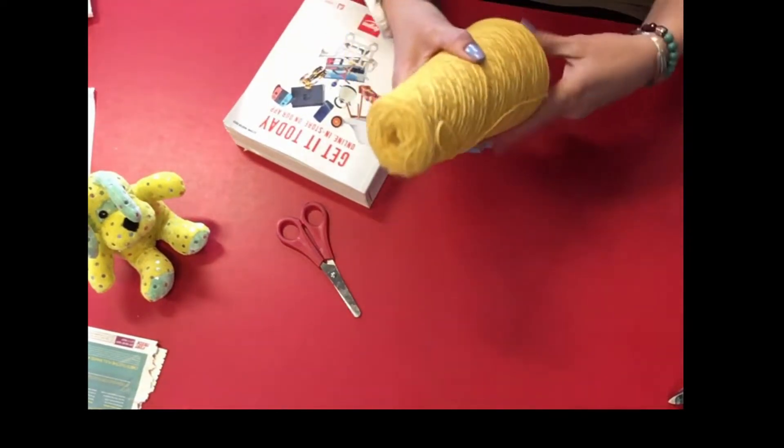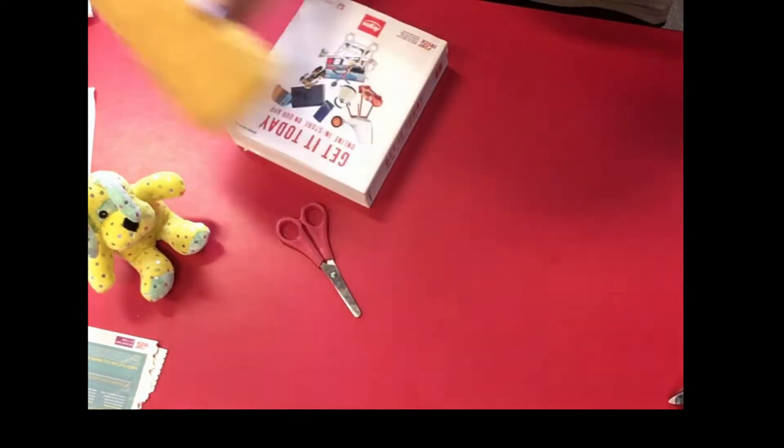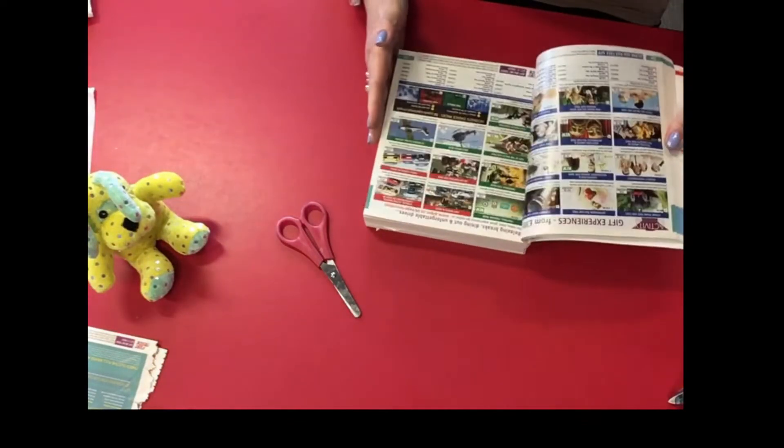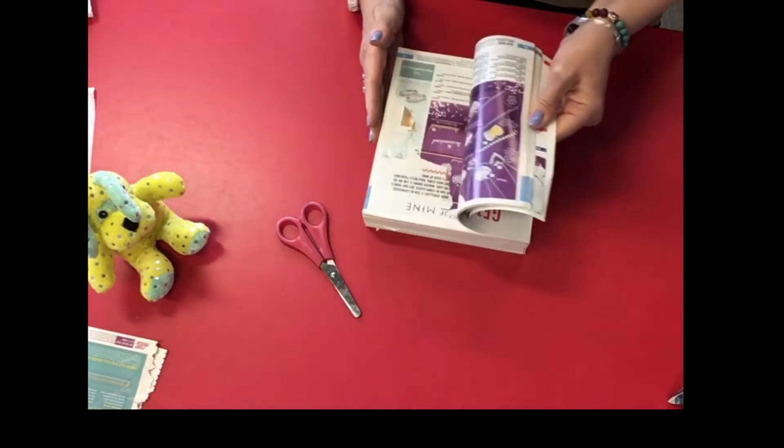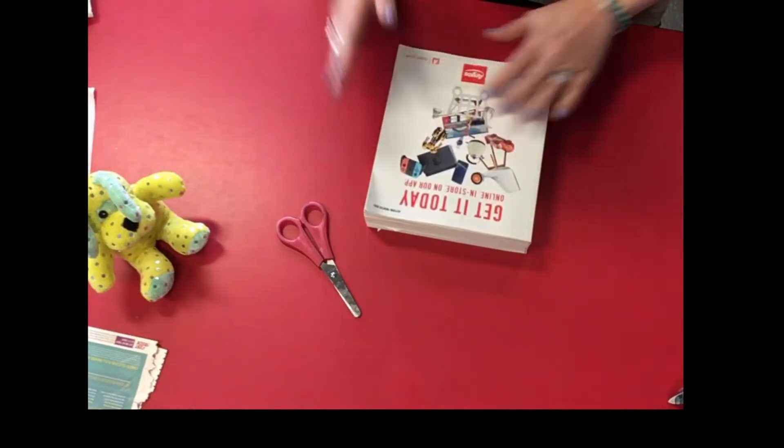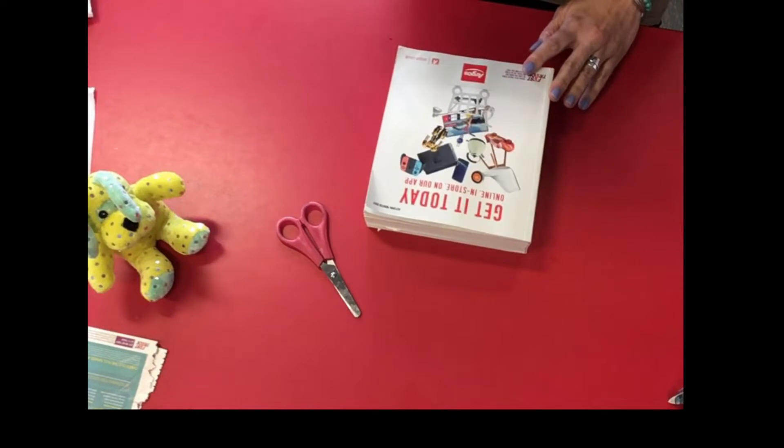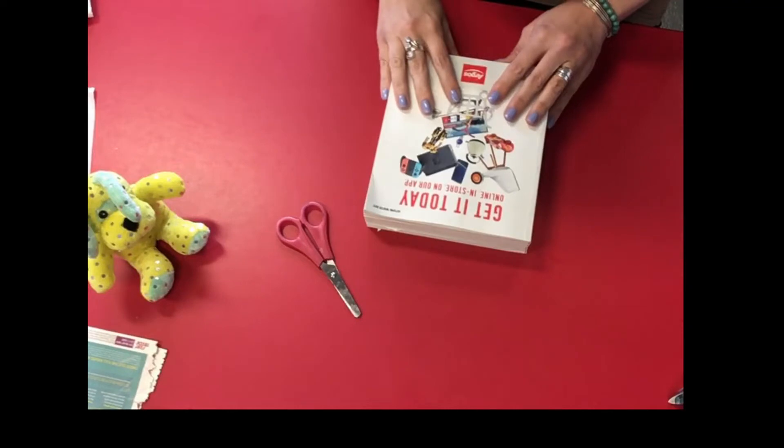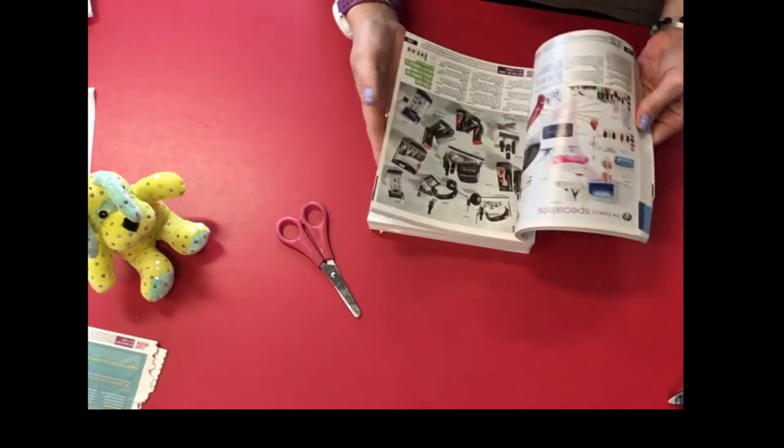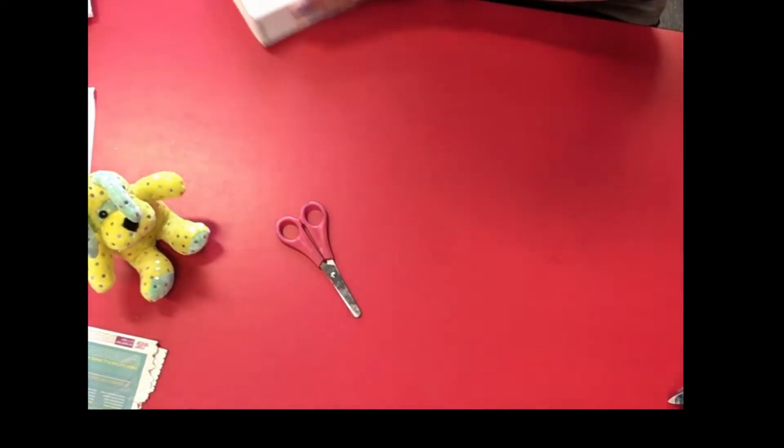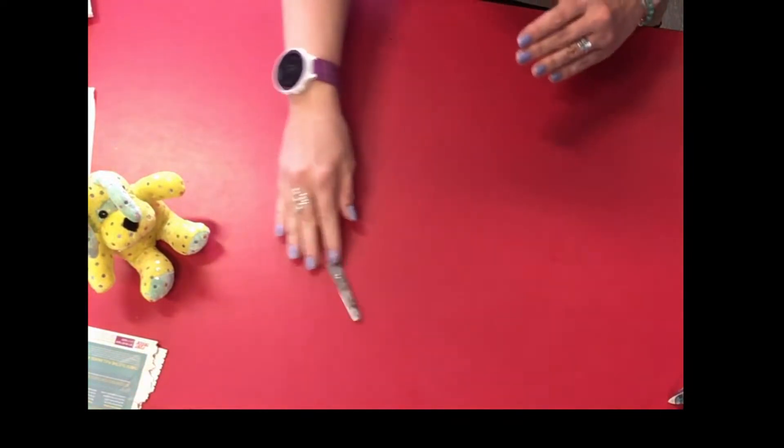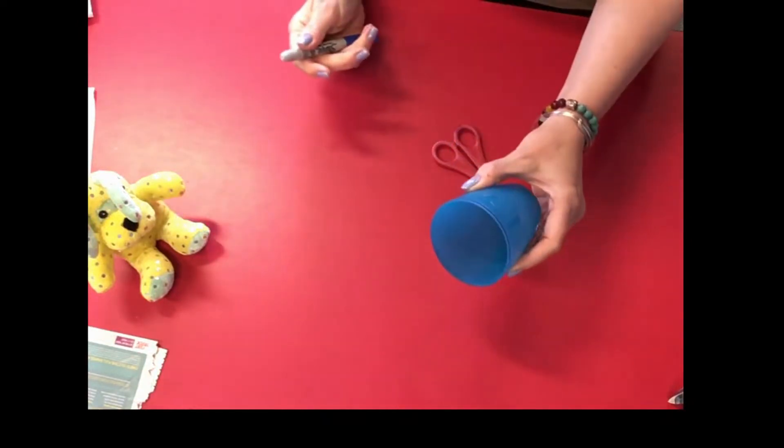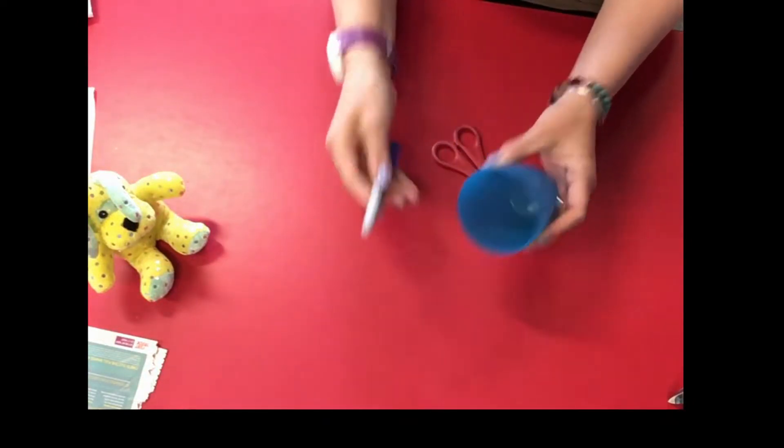So some of the things we're going to need are some wool or some string. We're going to need something like this. This is an old Argos catalogue but you can use anything you've got. It could even be old letters that you get through the mailbox or it could be some old colouring in pictures that you might have done you don't want anymore. Anything that's got lots and lots of colour on it so we can make things from that. We're going to need some scissors and we're also going to need a cup and a pen for drawing round.